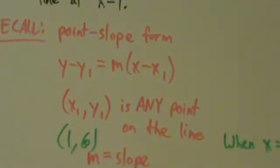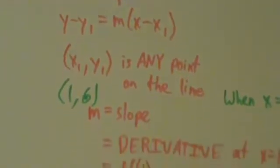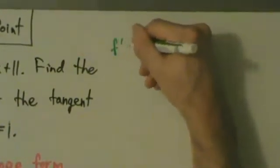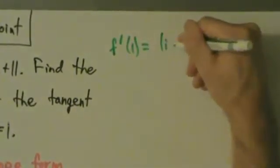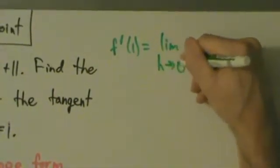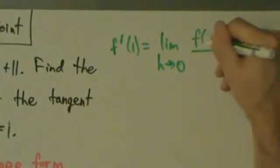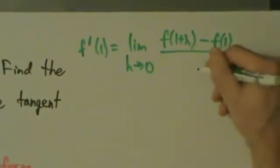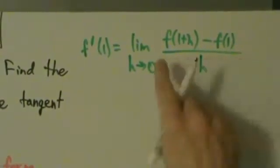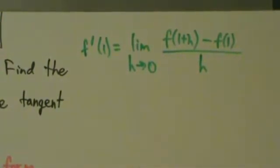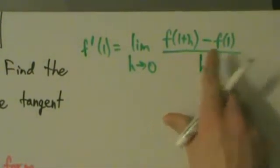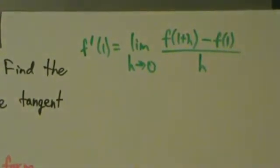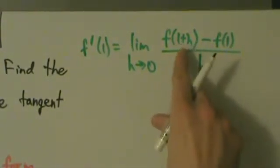Now let's figure out what f prime of 1 is. f prime of 1 equals the limit as h goes to 0 of f of 1 plus h minus f of 1, all divided by h. That's our difference quotient. We already know f of 1 equals 6, so now we just need to figure out what f of 1 plus h is.